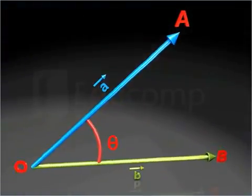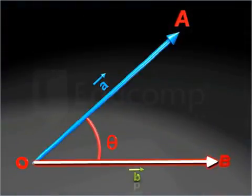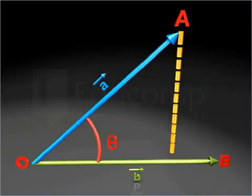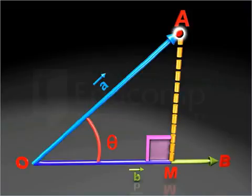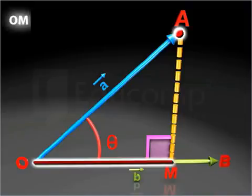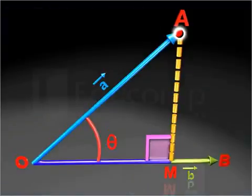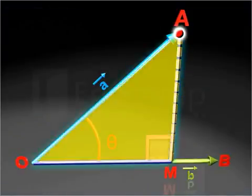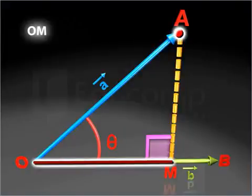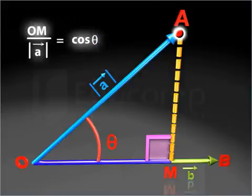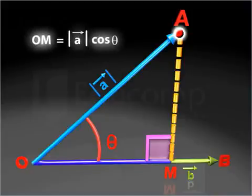The scalar product of vectors A and B can also be interpreted geometrically. If a perpendicular is drawn from the end point of vector A onto vector B, then OM represents the orthogonal projection of vector A on vector B. Considering the right triangle OAM, the ratio of the base to the hypotenuse — that is, the magnitude of vector A — is equal to cos theta. This helps us deduce that the base of this right triangle is the magnitude of vector A times cos theta.